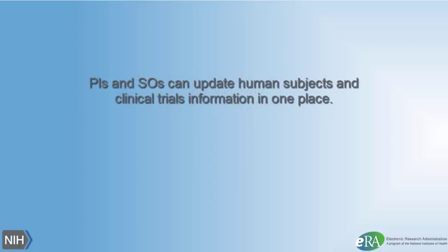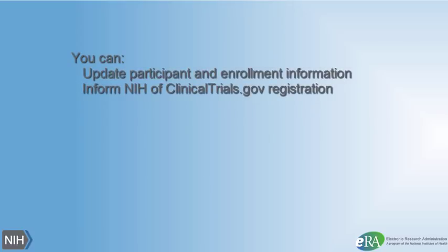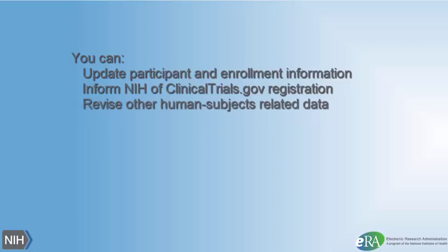This system allows principal investigators and signing officials to access and update all human subjects and clinical trials data associated with their grants in one place. You can update participant and enrollment information, inform NIH of ClinicalTrials.gov registration, and revise other human subjects related information as necessary, just in time for award or after a grant award is made.